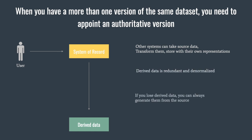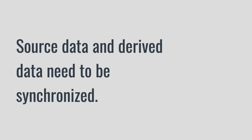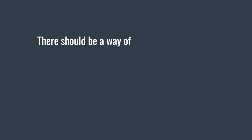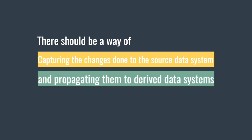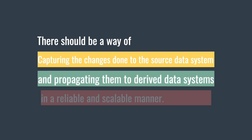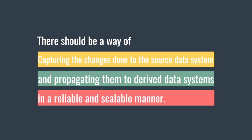If you lose derived data, you can recreate it from the source. Source data and derived data systems should not be kept in silos — they have to be synchronized to keep the application state consistent. A change made in the database has to be reflected in the search index, the cache, and ultimately in the data warehouse. So there should be a way of capturing changes done to the source data system and propagating them to derived data systems in a reliable and scalable manner. This is where the practice of change data capture comes into play.